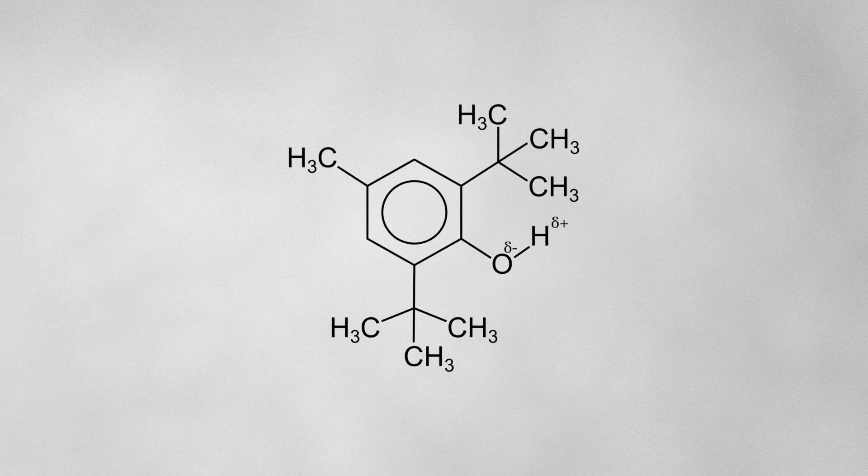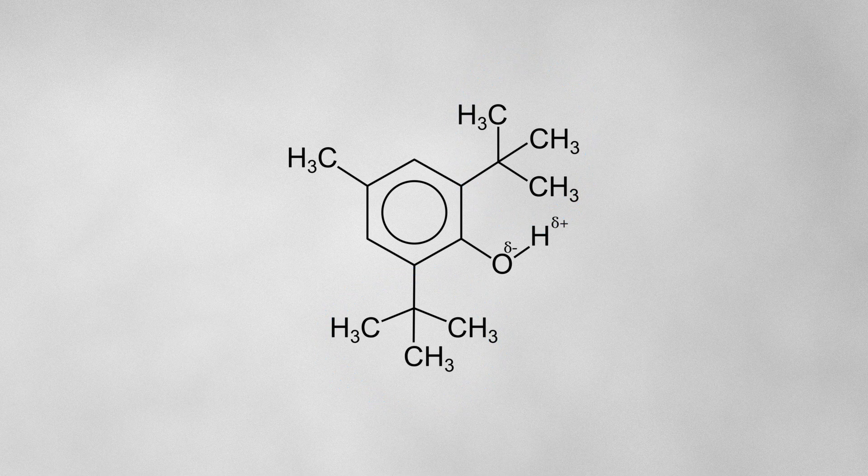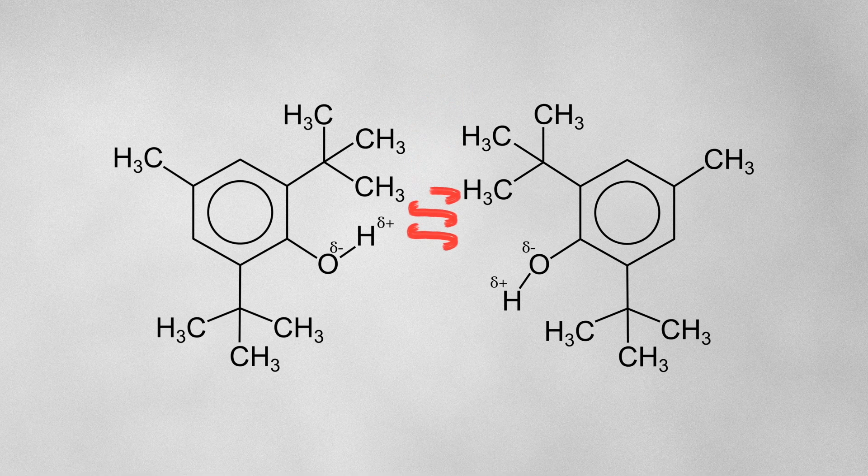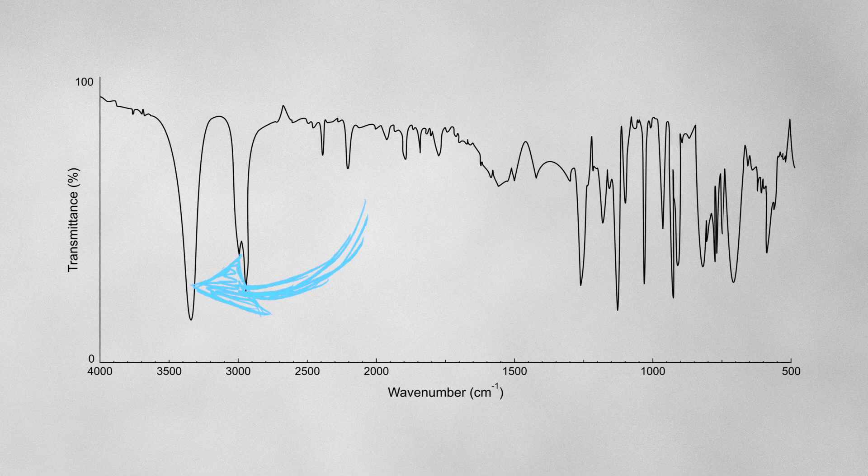In molecules like butylated hydroxytoluene, the bulky alkyl groups on either side of the OH group prevent the molecules from getting close enough to establish any hydrogen bonding, so the OH absorption for this molecule is sharp rather than broad.